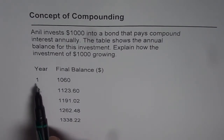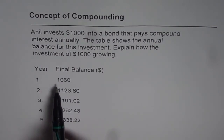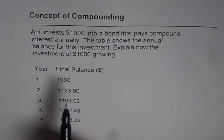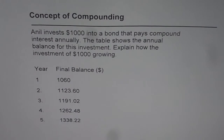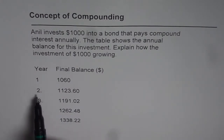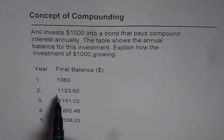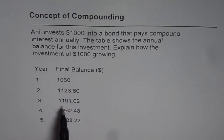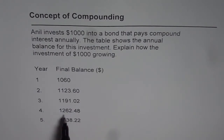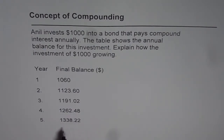After the end of the first year the balance is $1060 — we started with $1000, remember that. At the end of the second year it's $1123.60, then $1191.02, $1262.48, and then $1338.22.